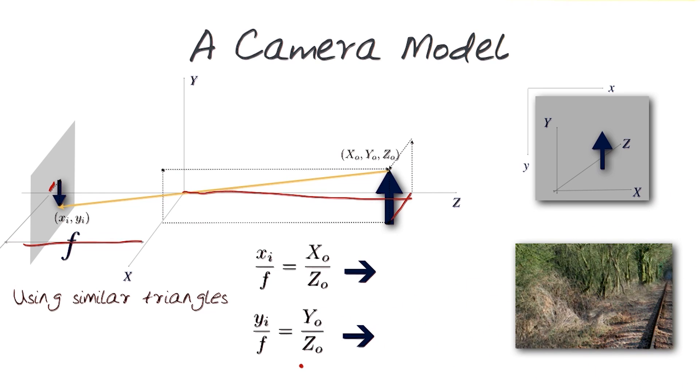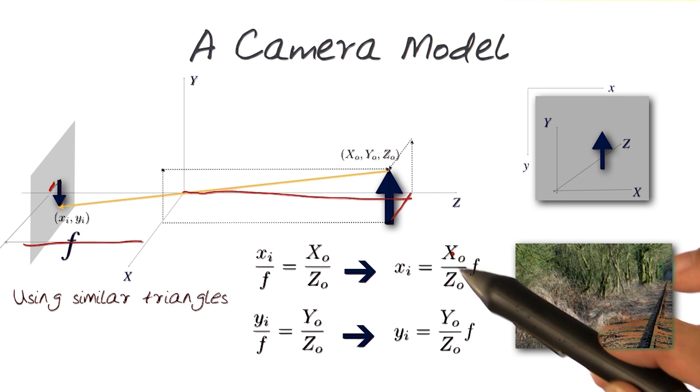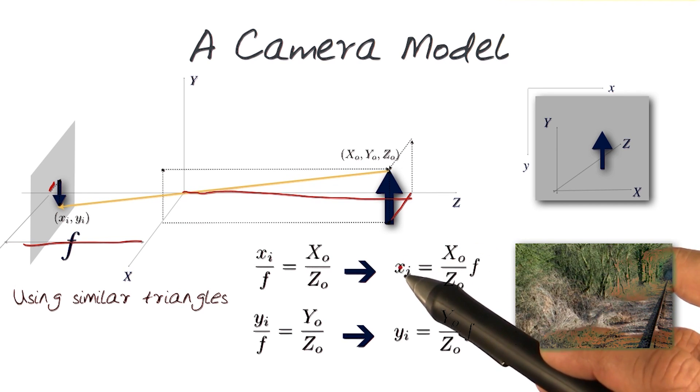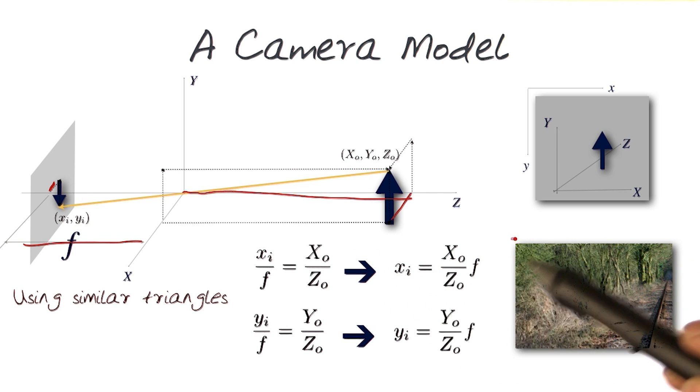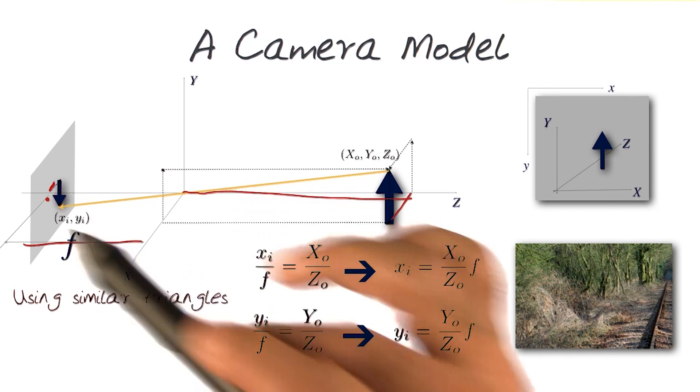We can simplify this to now be able to get values of xi and yi with this relationship. So as long as I know how far the object is from a scene and where it is, I should be able to now figure out where the pixel value would be on that image itself. Of course, not all the time do we know these values from the real world, especially just from an image.